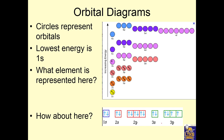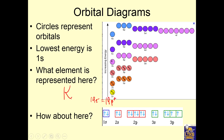An orbital diagram uses boxes or circles that represent places where electrons can go. The lowest energy is the 1s orbital, and we use arrows to represent electrons. So if you want to know what element this is, you count the electrons: 1, 2, 3, 4, 6, 8, 10, 12, 14, 16, 18, 19 — so this has 19 electrons. That means it has 19 protons in the nucleus, so this is potassium — atomic number 19.